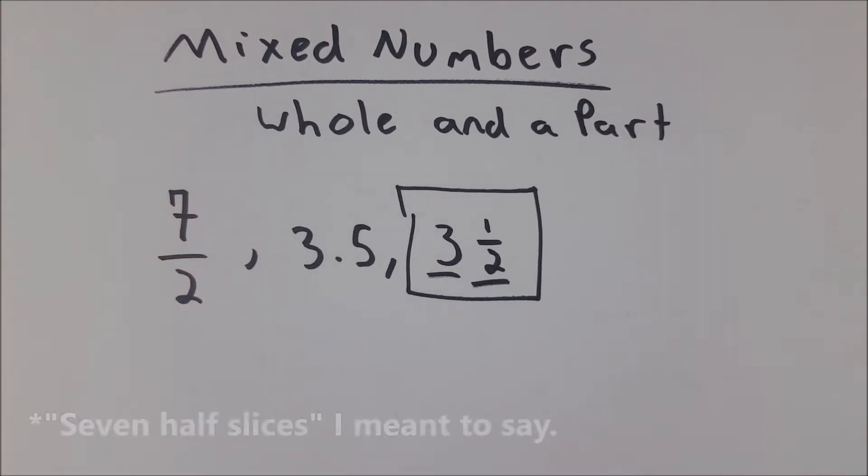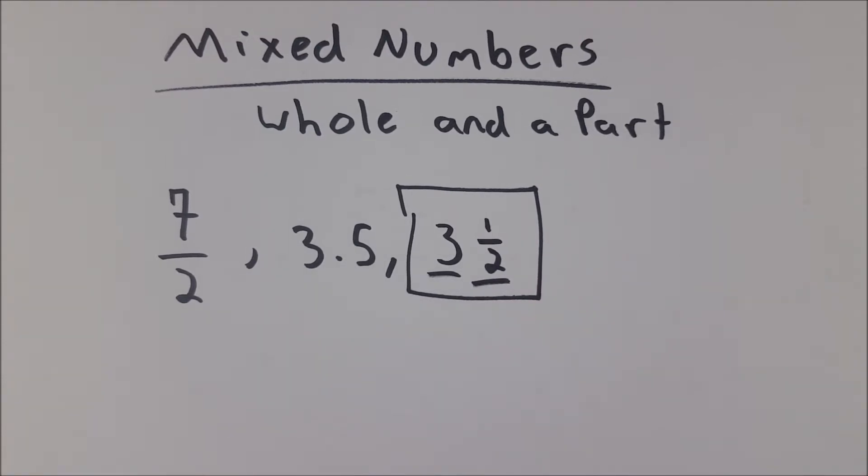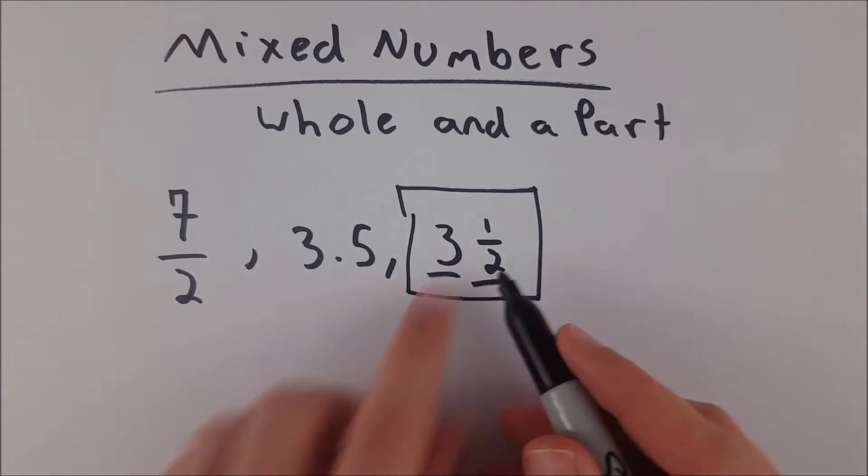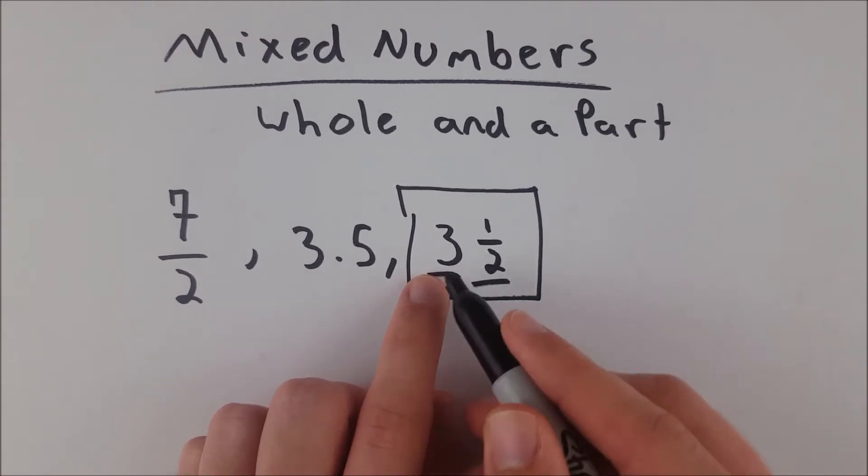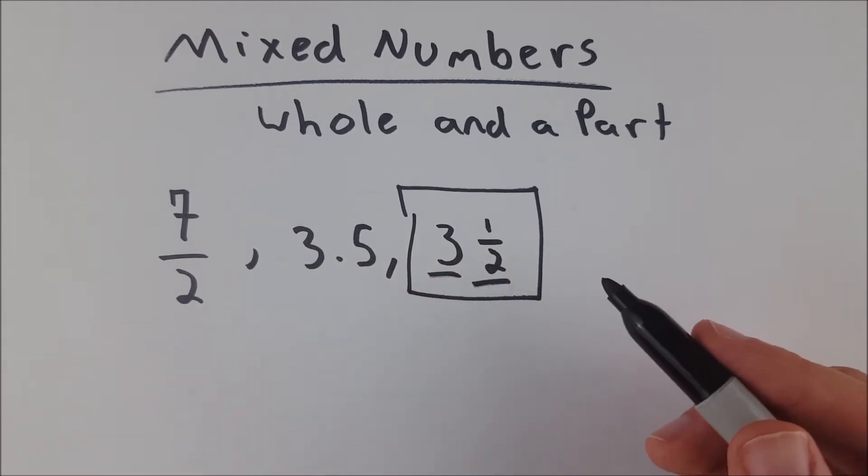You wouldn't say I ate seven halves of pizza, you would say I ate three and a half slices, which is sort of the English equivalent of the mixed number. You say your whole and then immediately follow that with your part. And that is what a mixed number is.